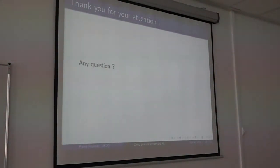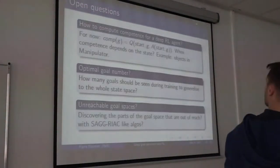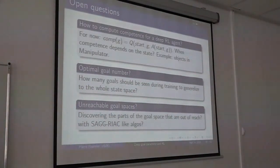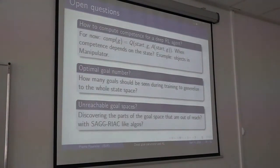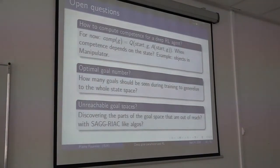In the Q&A, a comment was raised about the last open question: SAGRAC is most obviously useful in environments with unreachable parts. Engineers might know which features define goals but not which combinations are reachable. SAGRAC is efficient there because it rolls out parts where there's no learning progress — whether non-reachable or trivially easy. The question is whether it's more interesting to study better training, or discovering reachable versus unreachable parts of the state space — both are interesting questions.